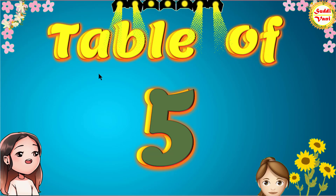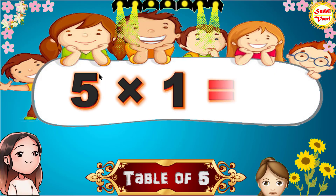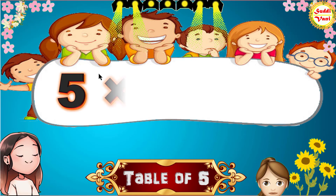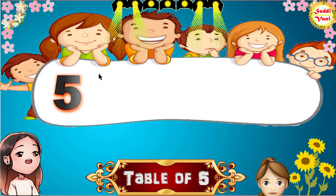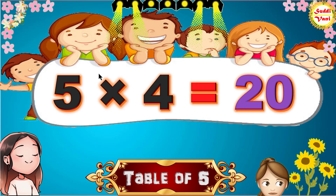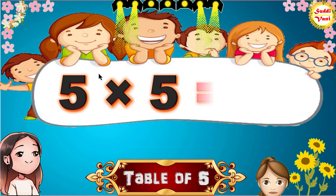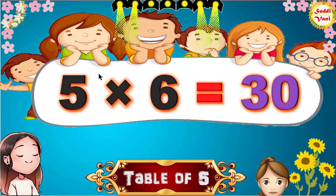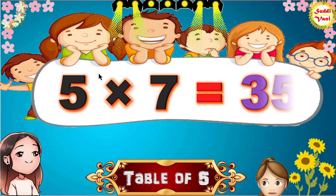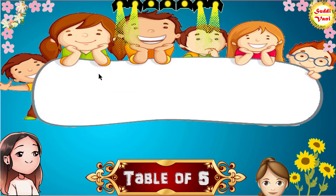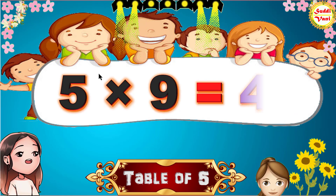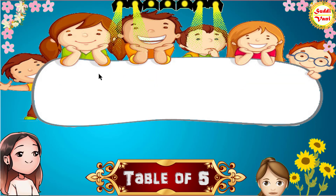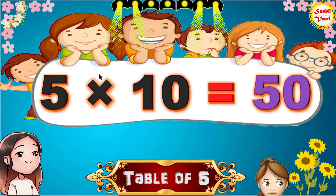Hello Children, we will learn Table of 5. 5 1s are 5, 5 2s are 10, 5 3s are 15, 5 4s are 20, 5 5s are 25, 5 6s are 30, 5 7s are 35, 5 8s are 40, 5 9s are 45, 5 10s are 50.